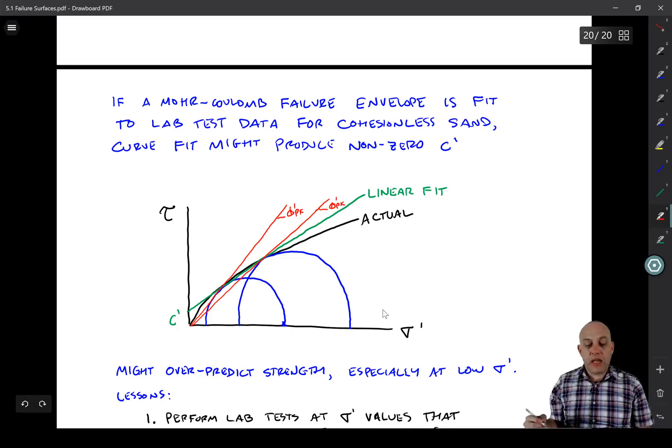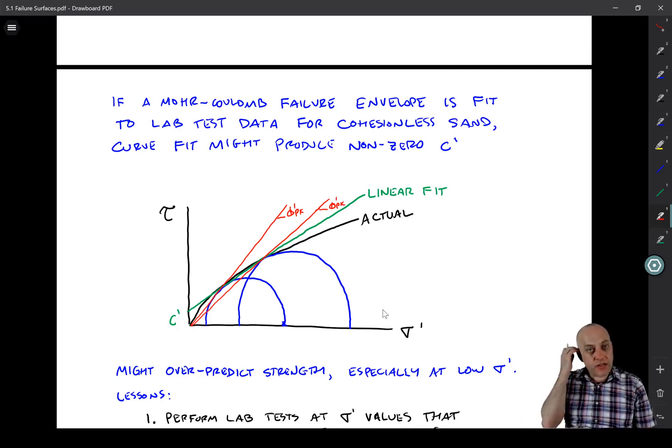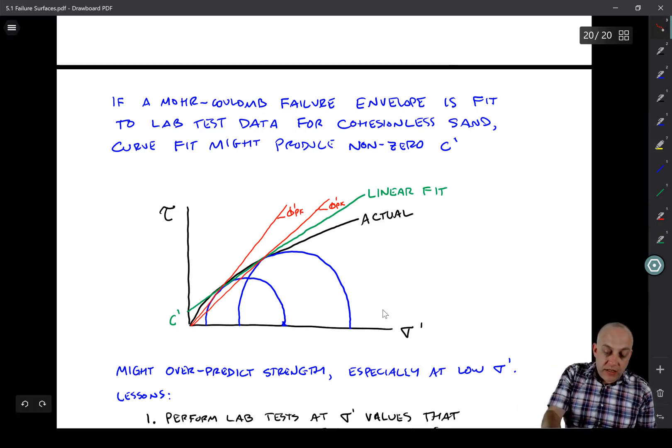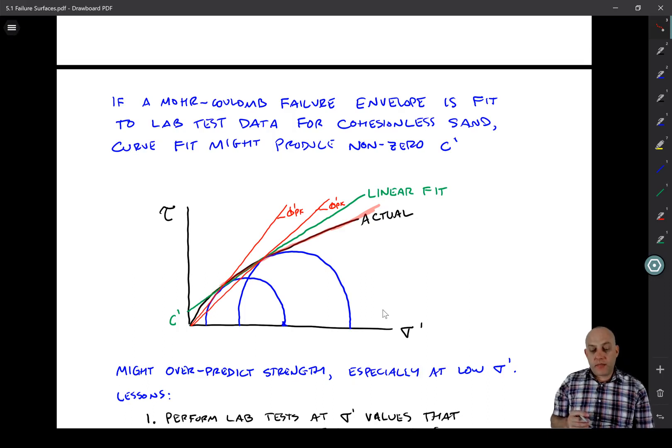And what ends up happening now, if you were to repeat this test at a whole bunch of different confining pressures, is that you would find that the failure surface is actually curved. It's not a straight line. Eventually, it will reach a straight line plateau. But at the beginning, the peak friction angles are much higher.